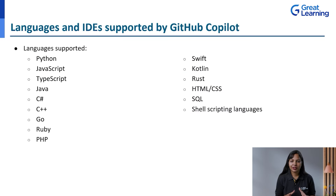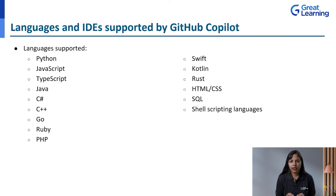Now let us talk about the languages and IDEs supported by GitHub Copilot. Before getting started with hands-on sessions, you need to know what programming languages you can use. The list is large, although not limited to: Python, JavaScript, TypeScript, Java, C#, C++, Go, Ruby, PHP, and many others. The list is not limited to just these programming languages — more may be added in the future.